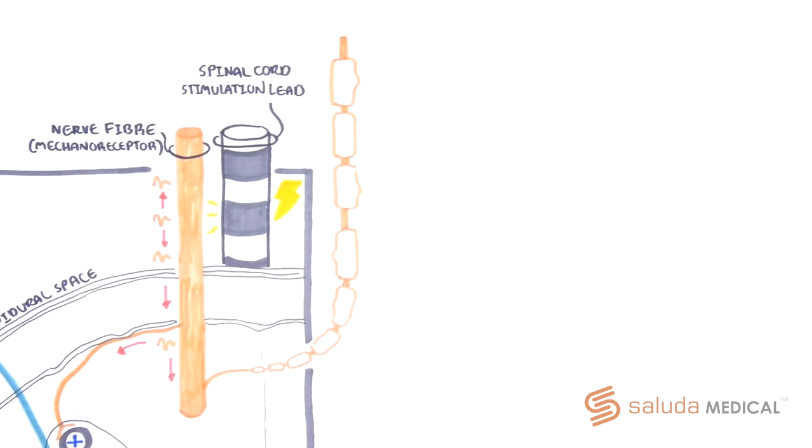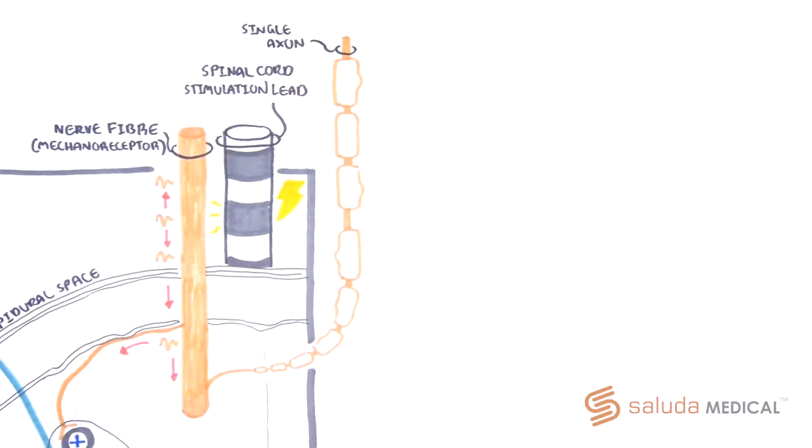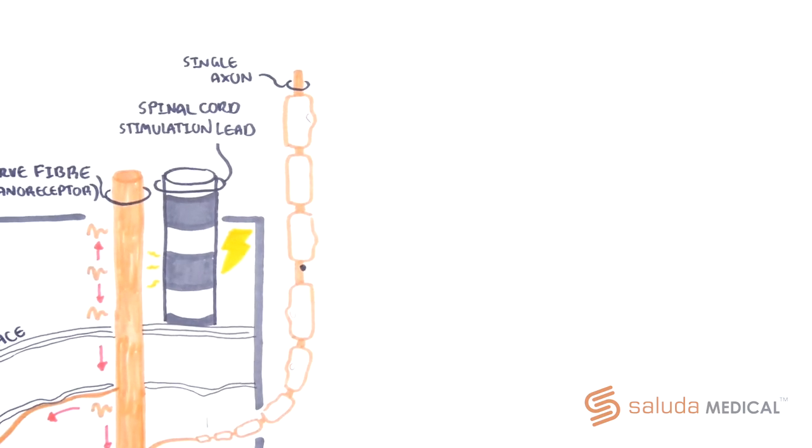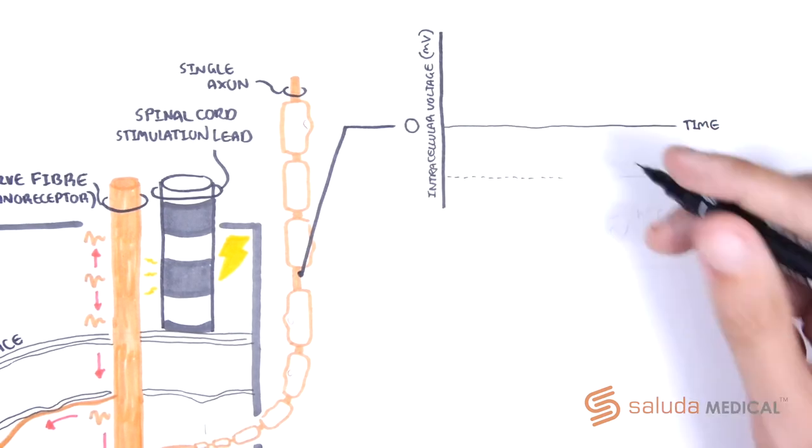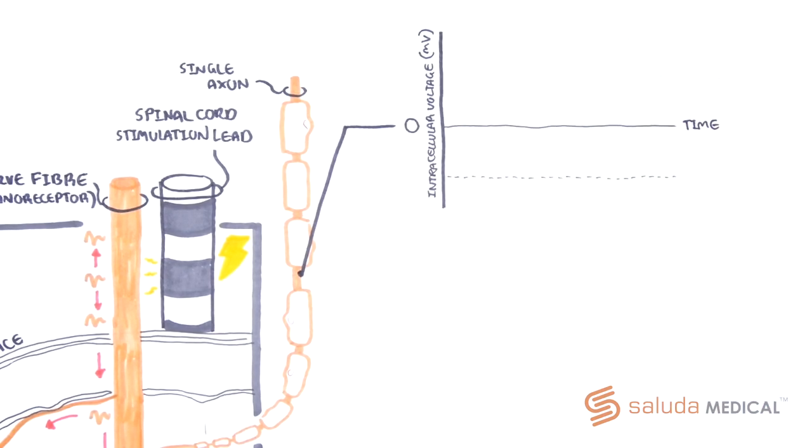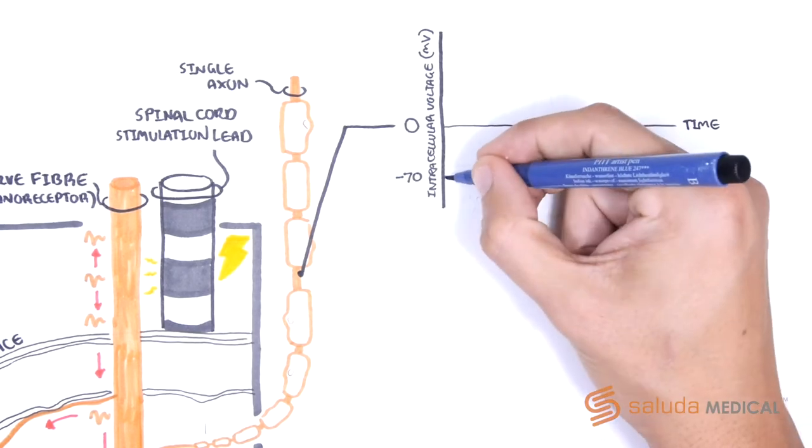If we imagine a single axon from the dorsal column fiber like such, voltage is a measure of potential difference, which means it compares two voltages on either side of a divide. In the neuron's case, this divide is a cell membrane. In its resting state, the inside of the neuron or its intracellular potential is negative 70 millivolts.